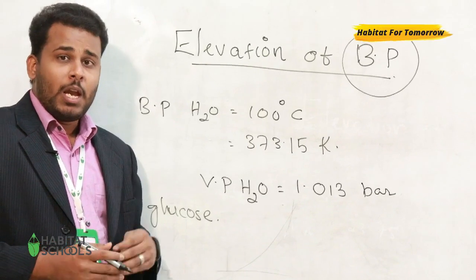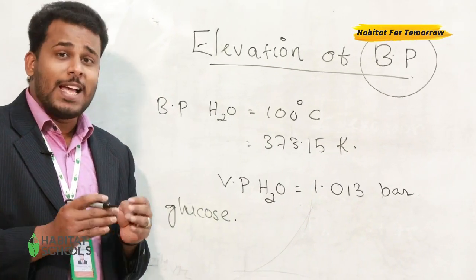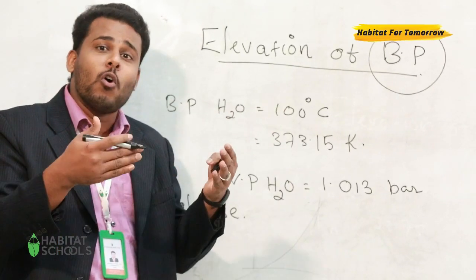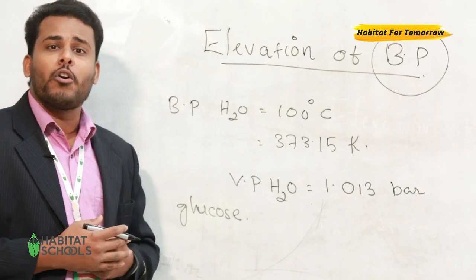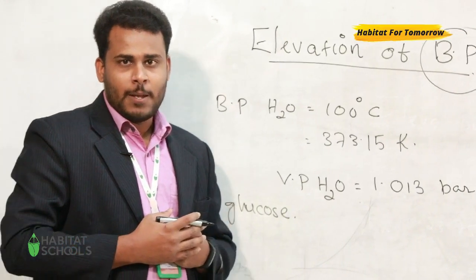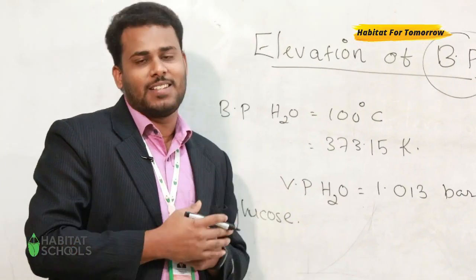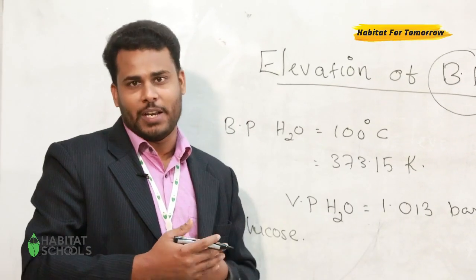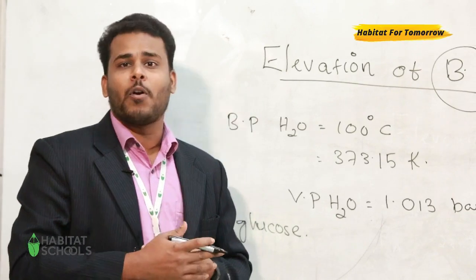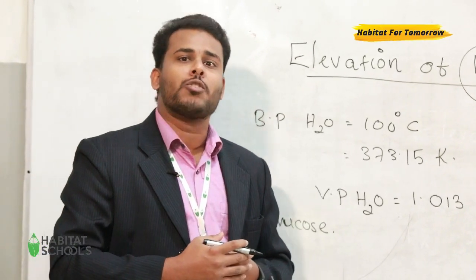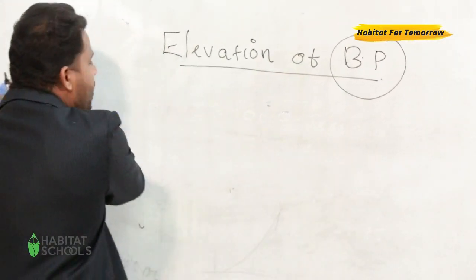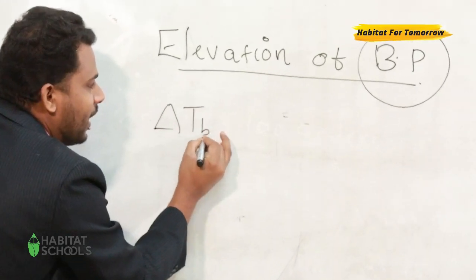In order to increase the vapor pressure back to atmospheric, the solution has to be heated to a greater extent. Consequently, the boiling point of the solution increases compared to the pure solvent. If the amount of solute increases, higher will be the boiling point, because the colligative property depends only on the number of solute particles and is independent of the nature of the solute.